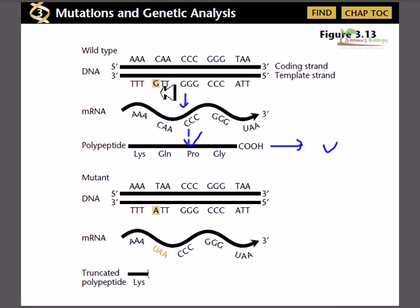After that, if we think about the mutation, suppose there is a single point mutation in this gene and the mutation is at this site. This G is mutated and instead of G it is replaced with T.